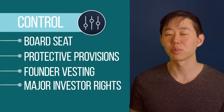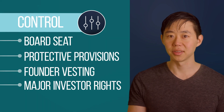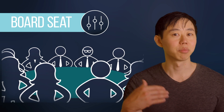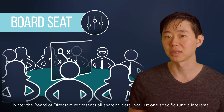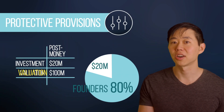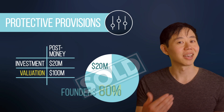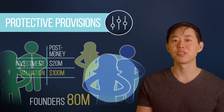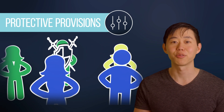Beyond economics, VCs also care about control provisions to protect their investment. The most important way they do this is by taking a board seat that holds a vote on key decisions like important hires and compensation packages. A typical early-stage board will have one or two founders, one or two investors, and sometimes an independent director — usually an odd number so voting doesn't deadlock. For most early-stage startups, most board seats still reside with founders so they retain control, but that can change as the company scales. Protective provisions are veto rights on certain key decisions where founders and investors can be at odds, such as selling the company.